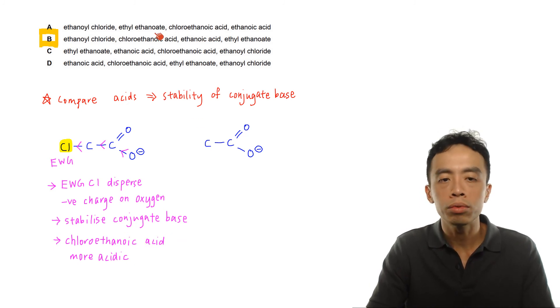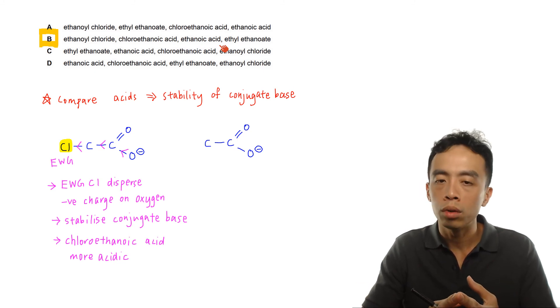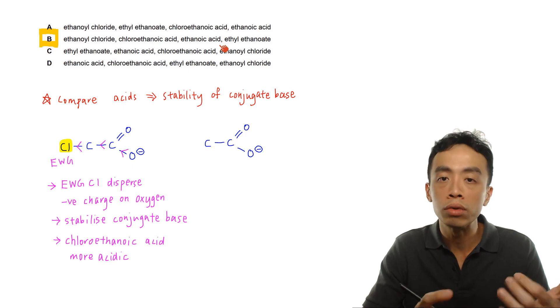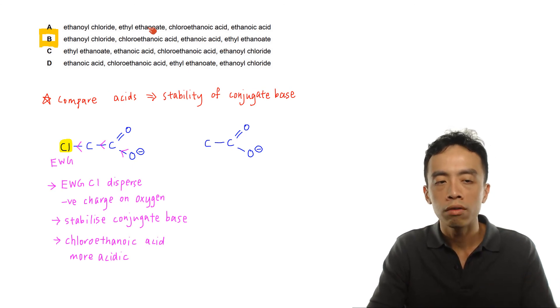Looking back at this option, you have to be consistent. The trend in increasing pH or decreasing acidity will be ethanoyl chloride, which is acid chloride, followed by chloroethanoic acid, ethanoic acid, and finally neutral ester which is ethyl ethanoate.